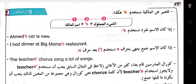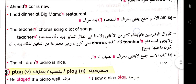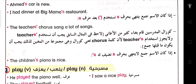Apostrophe S لأن Chorus جمع تعني كرال، وهي مجموعة من المغنيين، لذا يجب أن يقوم قبلها جمع. الحالة الثالثة: إذا كان الاسم جمع ولا ينتهي بحرف S، اللي هو irregular plural. Like: children, teeth, feet, oxen, women, men. Example: The children's piano is nice.